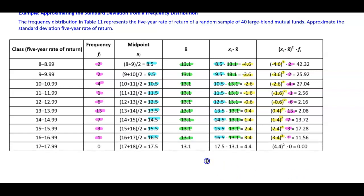The class 17 to 17.99 has a frequency of 0. The midpoint is 17.5 and the sample mean is 13.1. Taking 17.5 minus 13.1 gives 4.4. 4.4 squared times the frequency of 0 gives 0.